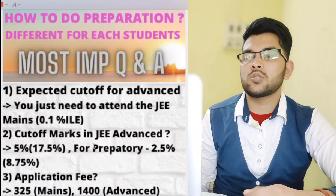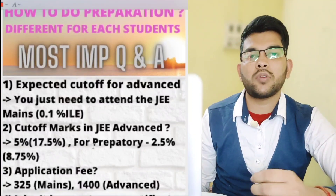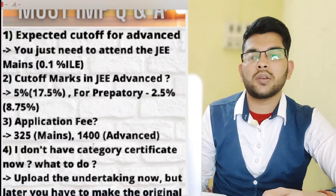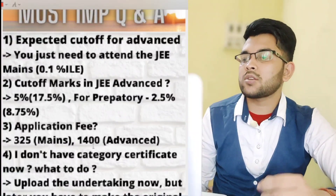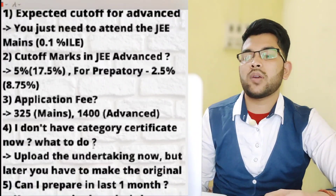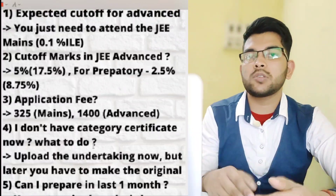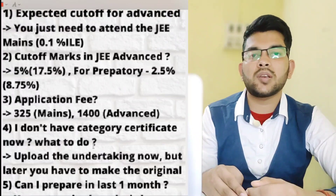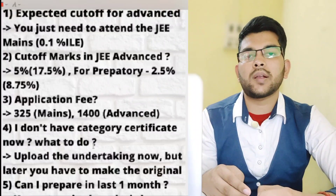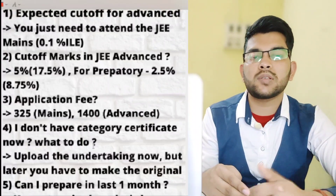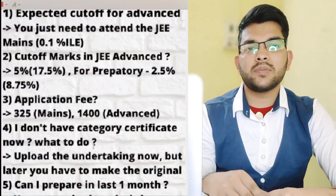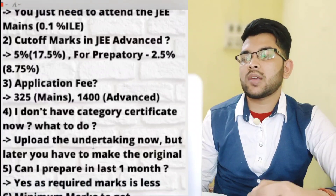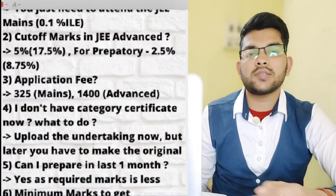Regarding application fees: for JEE Mains, 325 rupees is required per session, and for JEE Advanced, 1400 rupees. The next question is: what if you don't have a category certificate? Some PWD students also belong to SC or ST category. If you don't have the category certificate right now while JEE Mains registration is ongoing, you can submit an undertaking, but you must provide the original certificate later.